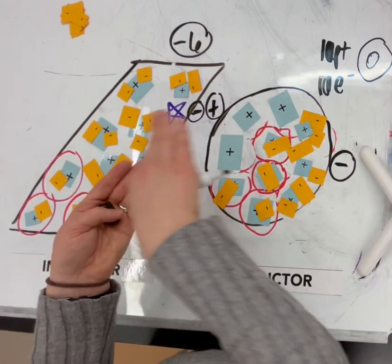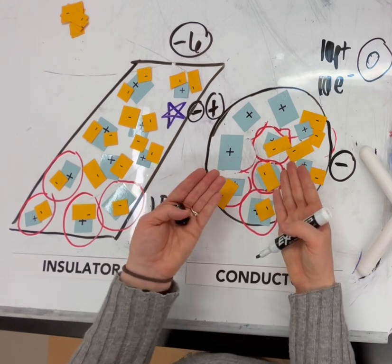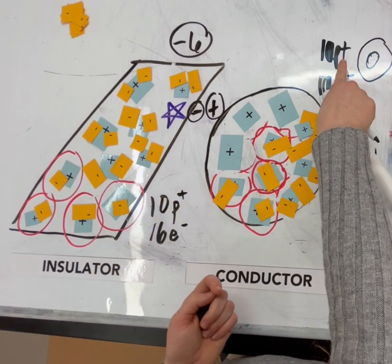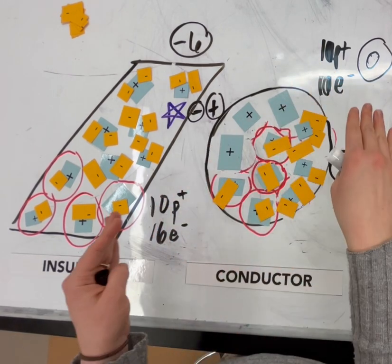So because no electrons left or went to the pithball, the pithball remains neutral. It still has 10 protons and it still has 10 electrons. So it remains neutral.